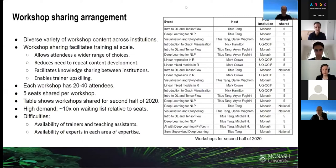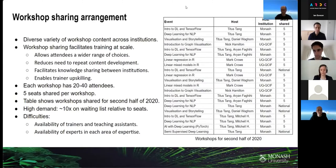One of the first things we did was to embark on a workshop sharing arrangement. This sharing arrangement is pretty simple: Monash makes workshops available for attendees at UQ and QCIF, and UQ and QCIF do the same for Monash staff and students. This provides a variety of immediate and clear benefits. Firstly, it allows attendees from both partner institutions access to a wider range of workshop content and expertise.